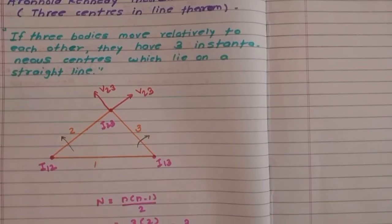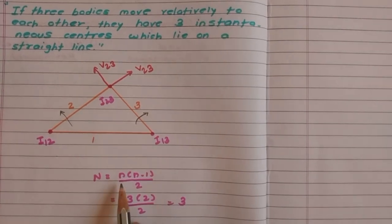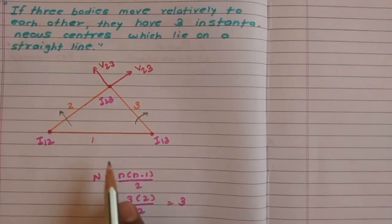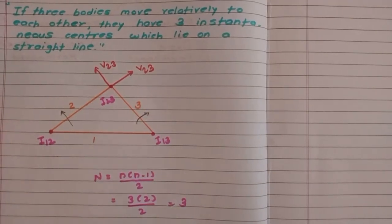We know the formula to find number of instantaneous centers: Capital N equals small n times n minus 1 divided by 2. As three links are present, the instantaneous centers should be 3.